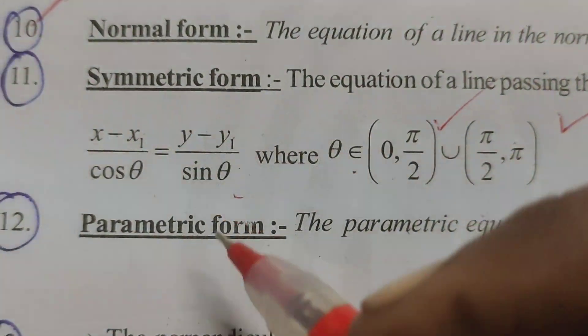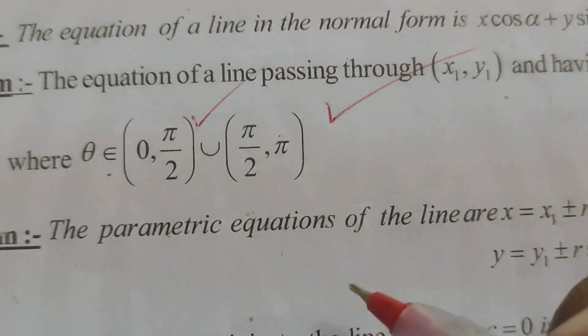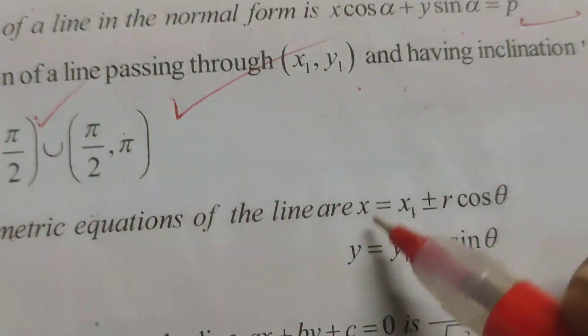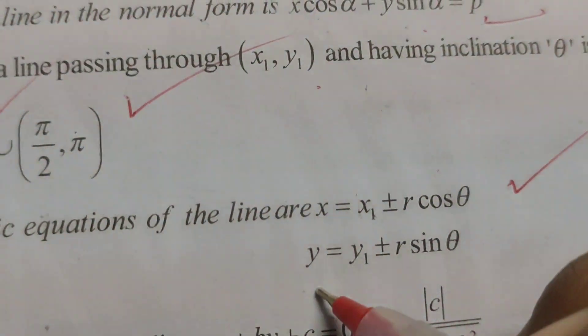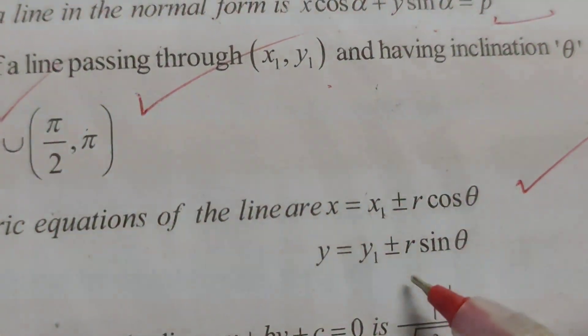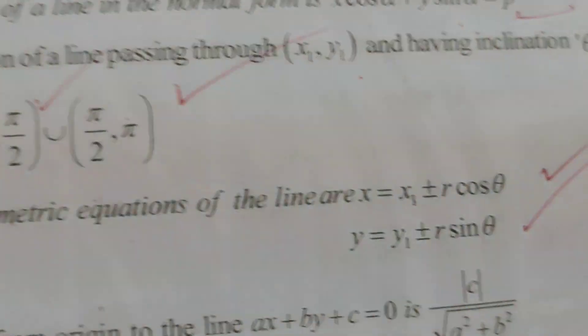Next, what is the parametric form? The parametric equation of the line are X equals to X1 plus or minus R cos theta, Y equals to Y1 plus or minus R sin theta.